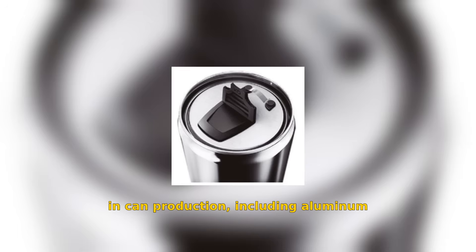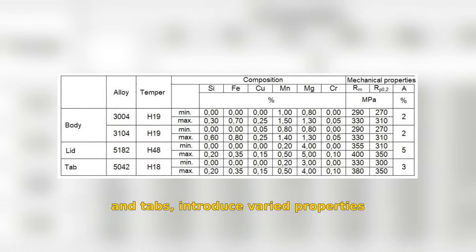The materials involved in can production, including aluminum alloys for the body, lids and tabs, introduce varied properties for optimized performance. For the body of the can, a strip of aluminum alloy 3004 or aluminum alloy 3104 is used, both in H19 temper.